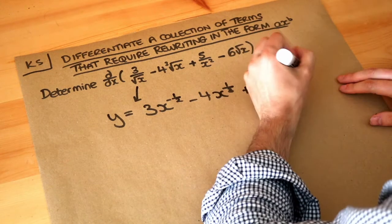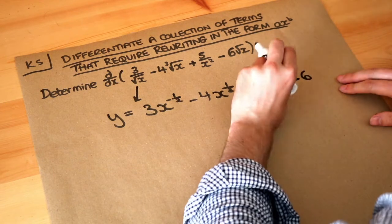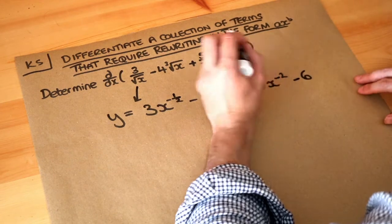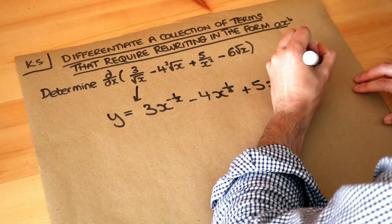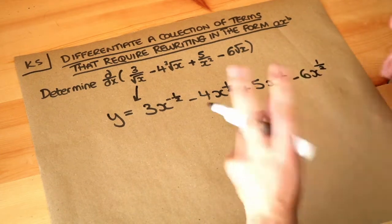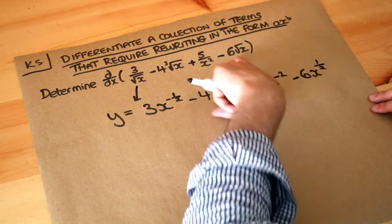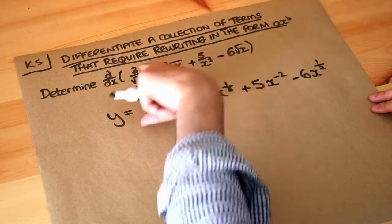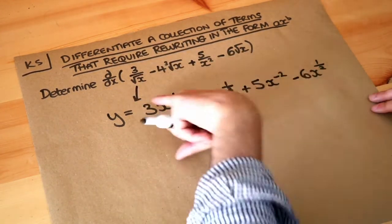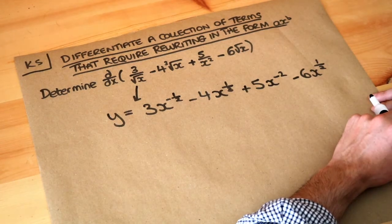Finally, we've got minus 6 root X. As we discussed, root X is just X to the half. So this term is minus 6X to the half. Now, we haven't actually differentiated yet — all we've done is rewrite the expression in a form that makes it easier to differentiate.